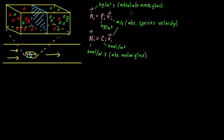And then the total absolute mass flux is simply the sum over each species. Maybe this is kind of obvious, but I think it's worth spelling out explicitly: the absolute mass flux of the system is simply the sum of the absolute mass fluxes of each species. Similarly, the system absolute molar flux is the sum over all of the species' absolute molar fluxes.